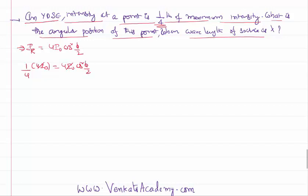So 4I₀ can be cancelled, that implies cos²(φ/2) is 1/4, that implies cos(φ/2) is 1/2, that implies φ/2 is equal to π/3. Cos 60° is half, that implies the phase difference between them is equal to 2π/3.